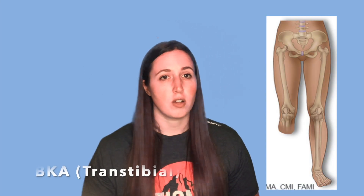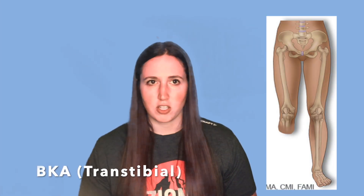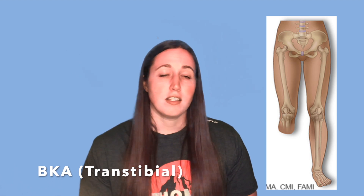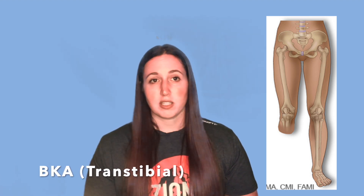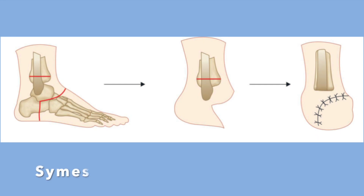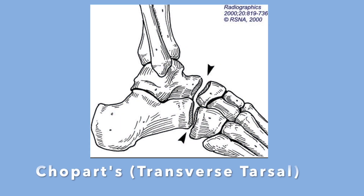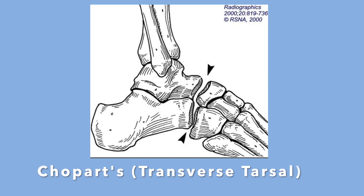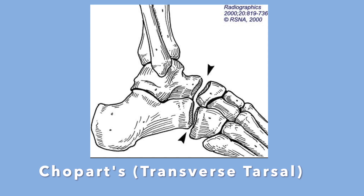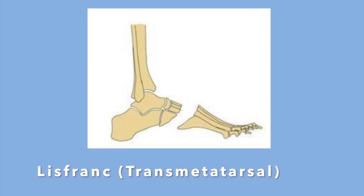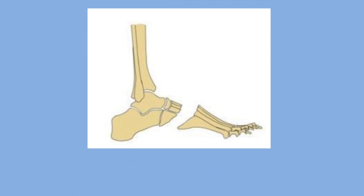A below-knee amputation, also known as a transtibial amputation, is basically getting cut off mid-tibia. These patients bear weight on their residual limb, usually at the patellar tendon. Closer to the foot, there is a Symes amputation, which is below the tibia and fibula and can cause a bulbous residual limb. There's also a transverse tarsal or Chopart amputation where the foot is cut off at the tarsal bones, causing loss of the dorsiflexor muscles. And a Lisfranc amputation involves cutting just before the metatarsal bones.